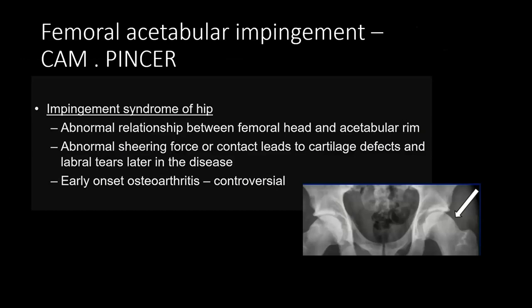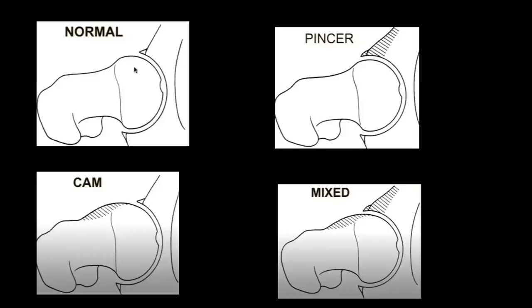Now we'll discuss FAI — femoro-acetabular impingement. There are two types: CAM type, pincer type, and sometimes a combination we call mixed FAI, which is more common than individual types. In CAM type, the femoral head should be spherical and round, but here the shape is aspherical and there is a small bump at the head-neck junction. We also call this the pistol grip sign. In the pincer variety, there is over-coverage of the acetabulum. And in the mixed variety, there is both over-coverage as well as a bony bump. Another cause of FAI is retroversion.